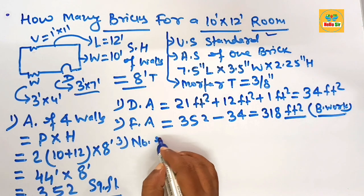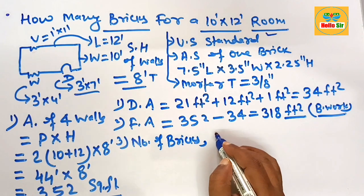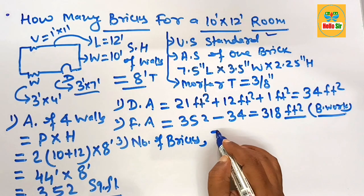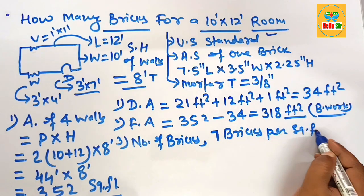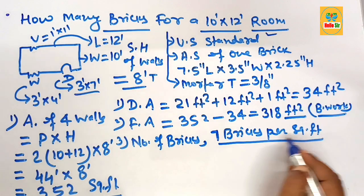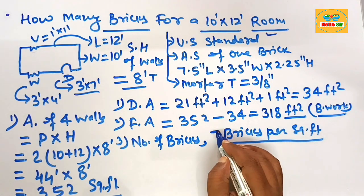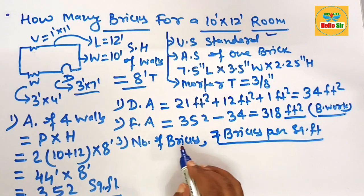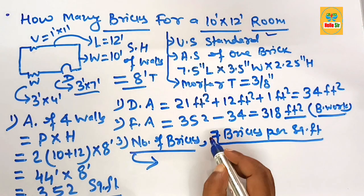Now calculate the number of bricks. Remember, there are 7 bricks per square foot as per United States practice. This means one square foot of brickwork requires approximately 7 bricks. The total area is 318 square feet. Multiply: 318 × 7 = 2,226 bricks.